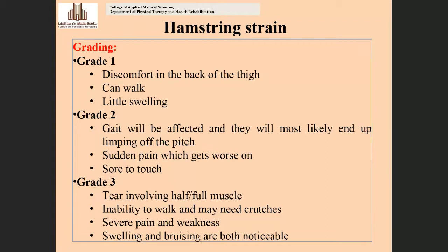There are three grades of hamstring strain. Grade one: slight discomfort in the back of the thigh, the person can walk, and there is little swelling. Grade two: gait is affected and the player will likely end up limping off the pitch, with sudden increased severe pain and tenderness on palpation.